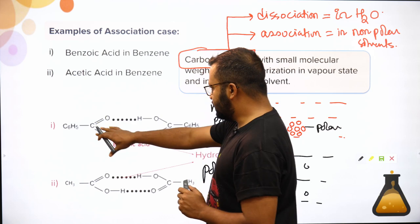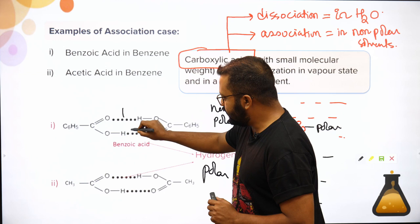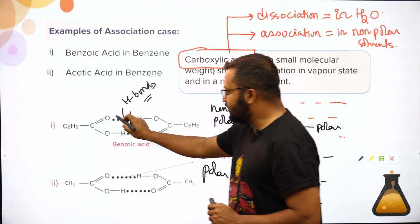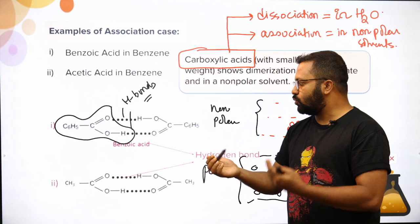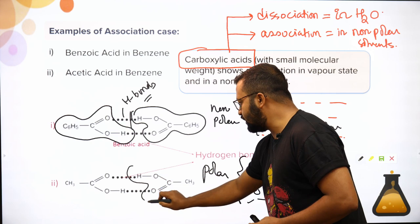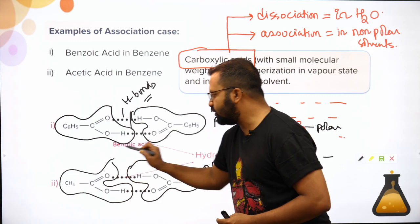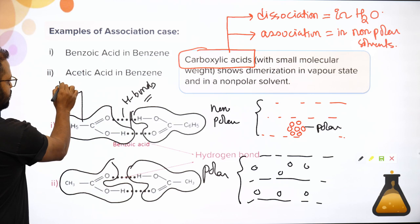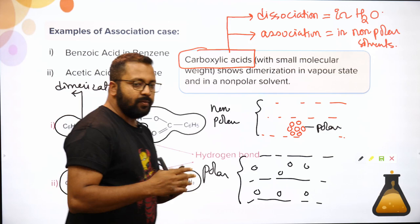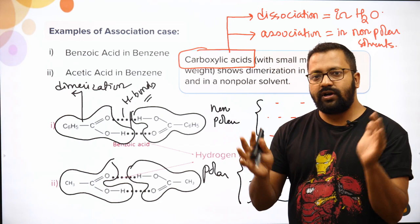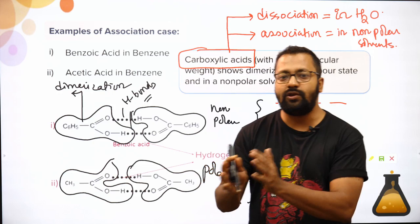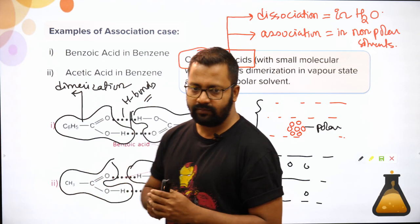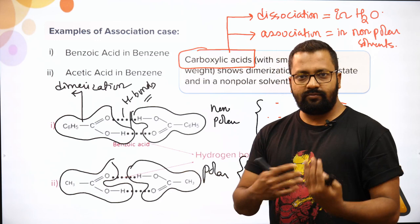So benzoic acid will associate in non-polar solvents or in the vapour state, but will dissociate in polar medium like water. This is very vital and a common mistake students make. As shown, two benzoic acid molecules interact via intermolecular hydrogen bonds to form a dimer — this is called dimerization. A dimer means two units associating; trimerization means three units associating.